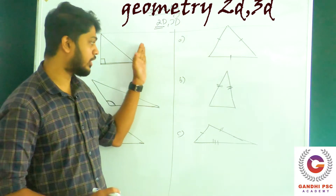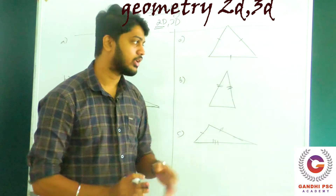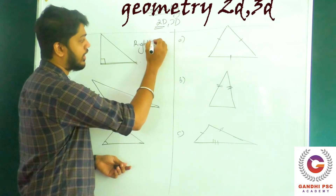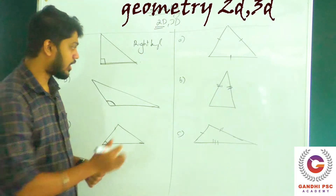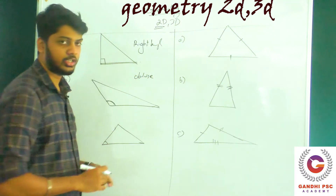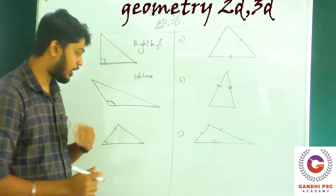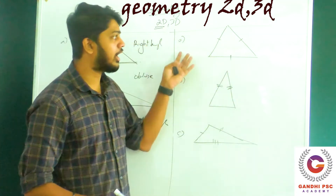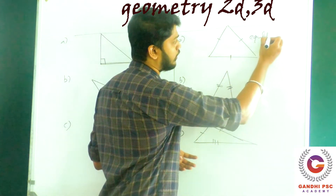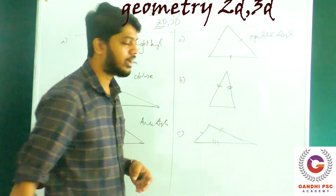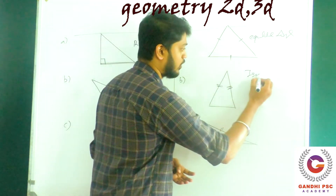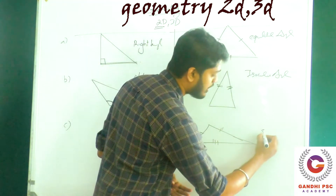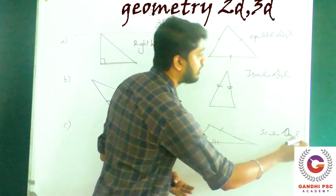The triangle can be classified by angle: we have the right triangle, the obtuse triangle, and the acute triangle. By sides, we have the equilateral triangle and the scalene triangle.